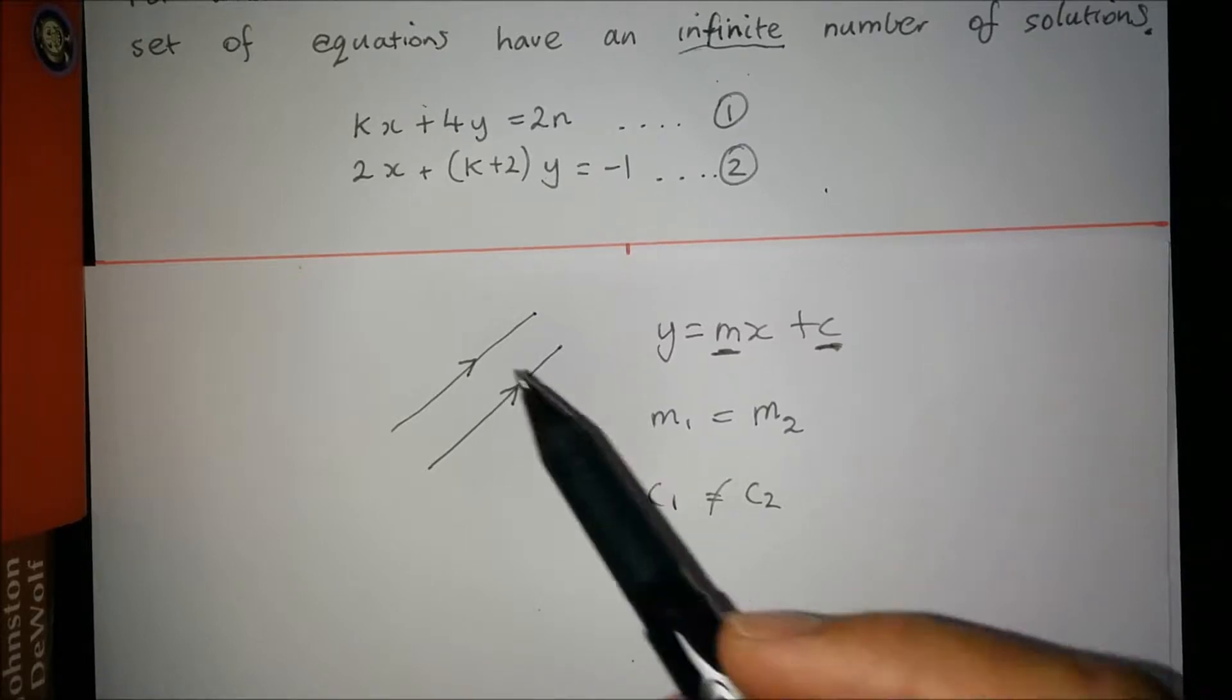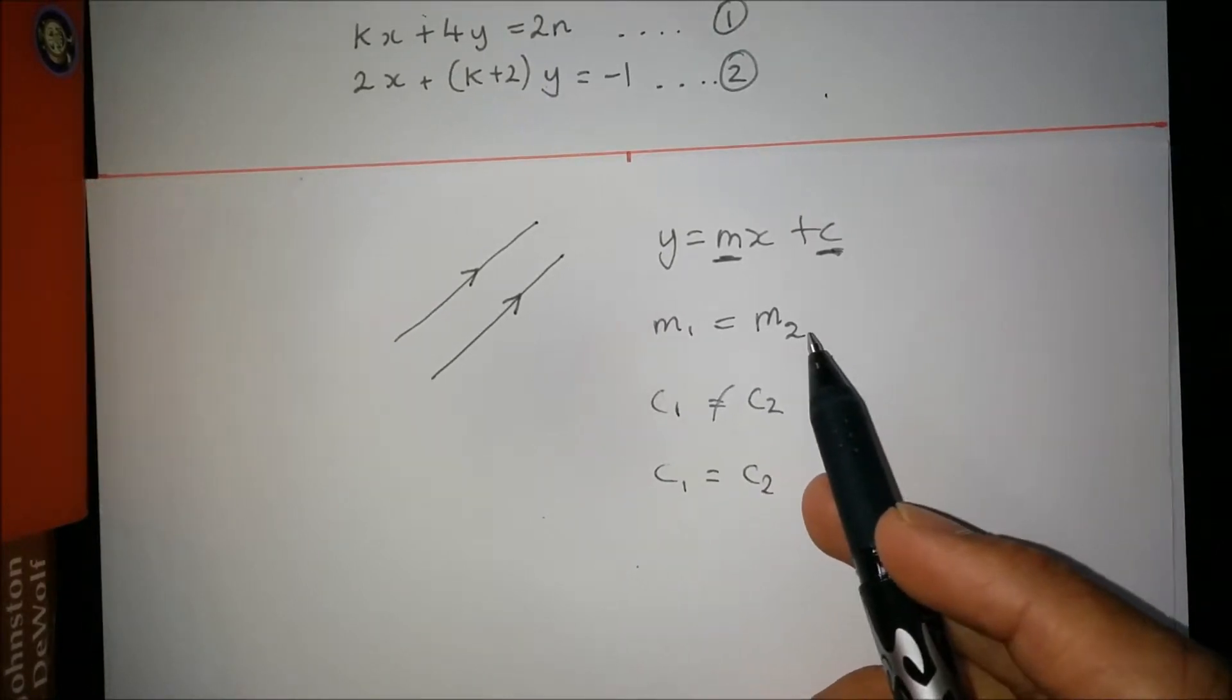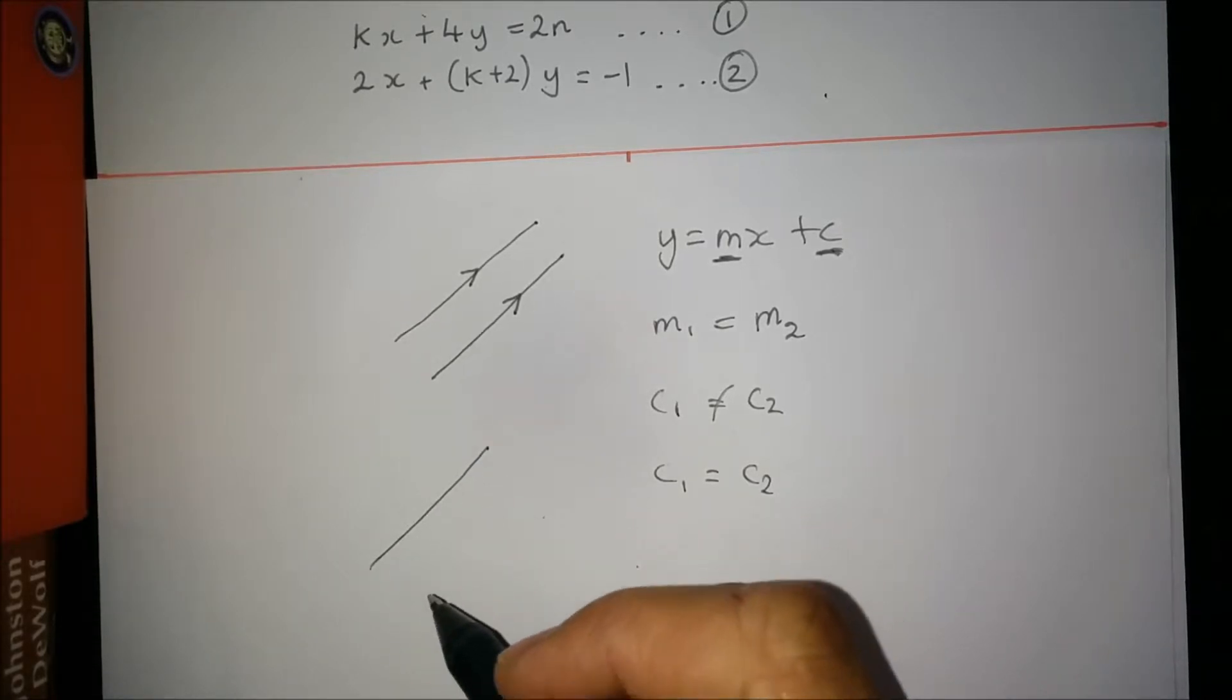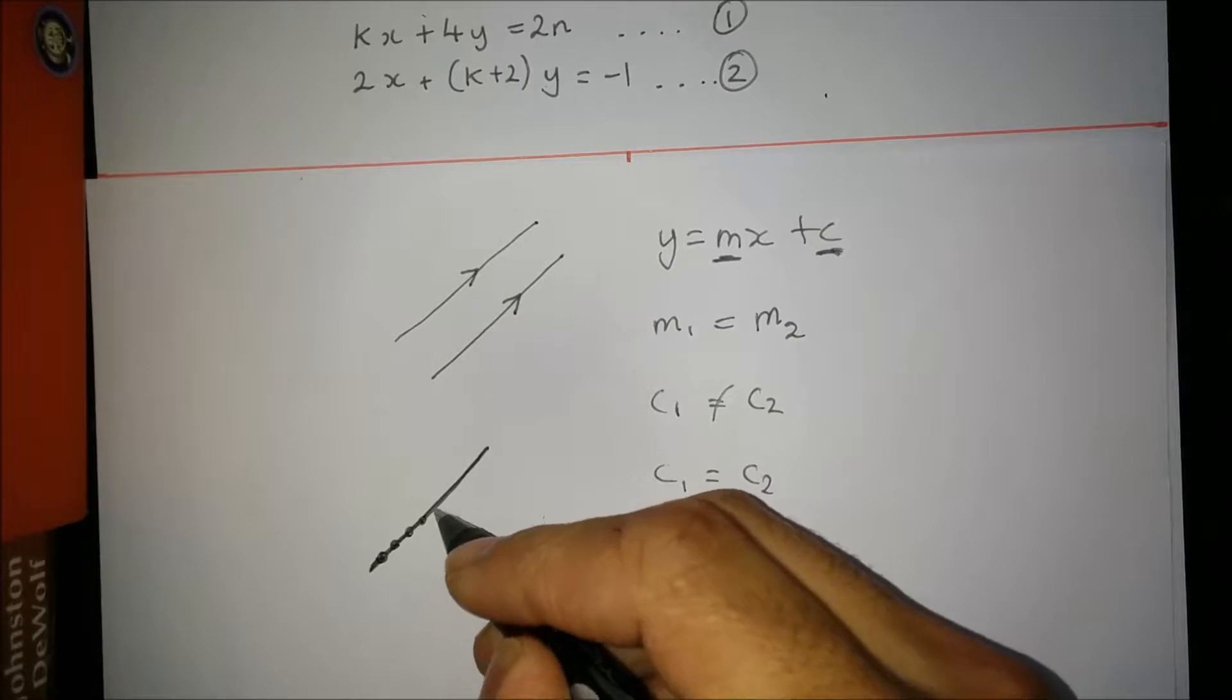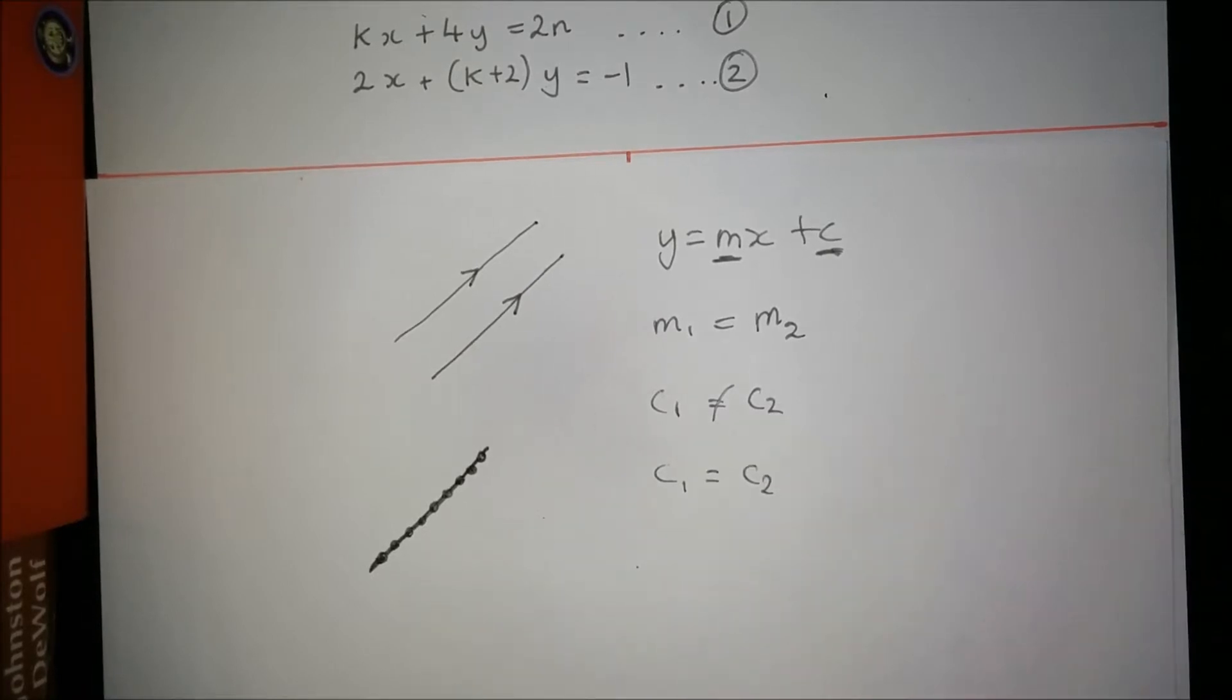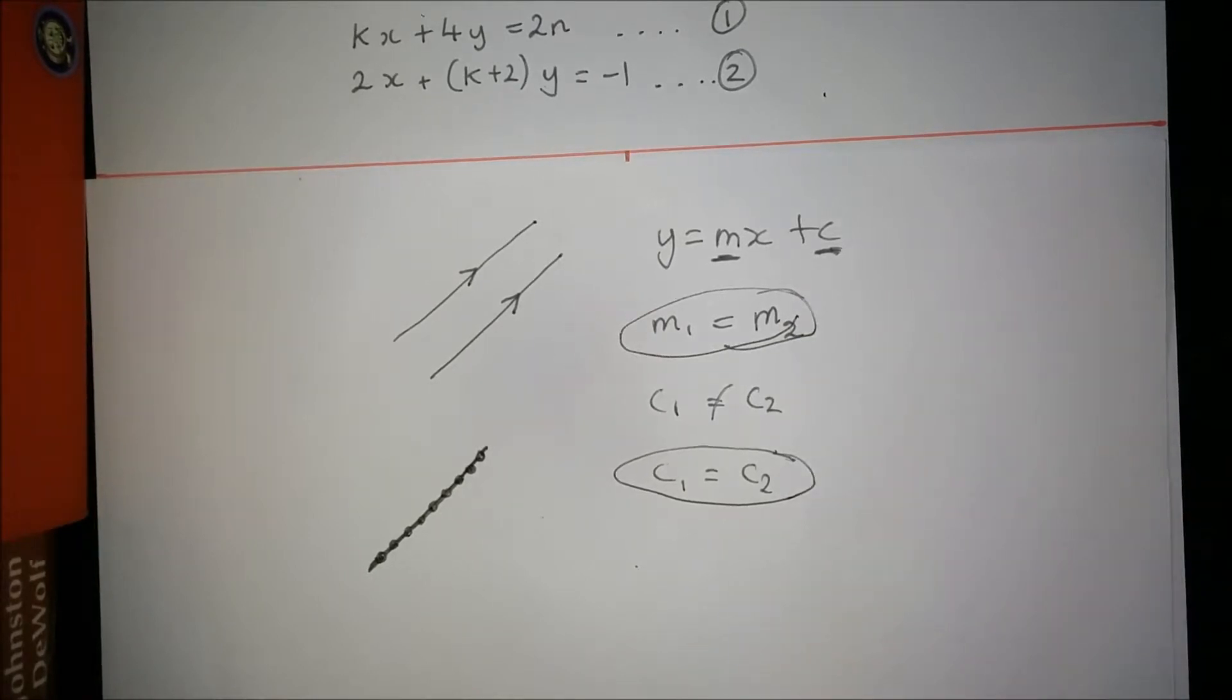They'd be laid on top of each other. So this is no solutions. If they were the same value for c and the same value for m, you'd have a situation where the first line looks like this. It doesn't necessarily have to be a positive gradient. And the second line would also look exactly the same. It would be laid on top of it. And each point on the graph would be a solution. And as you know, in a linear equation, there are an infinite number of points on it. So that's the situation we're after. And we know this happens when values of c are the same and the values of m are also the same.